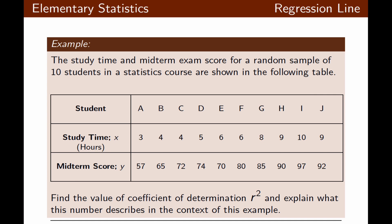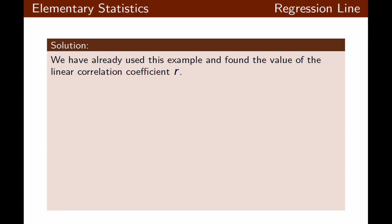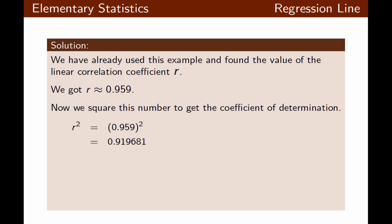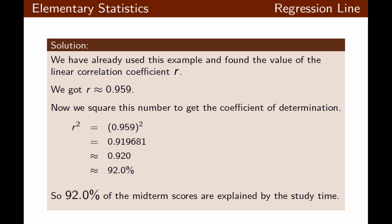Looking at our example of 10 randomly selected students, we want to find the coefficient of determination and explain what it describes. We already found r in our previous example. We square this number, round to three decimal places, and convert to a percentage. This means 92% of the midterm scores are explained by study time. The other 8% are unexplained and could be due to other factors.